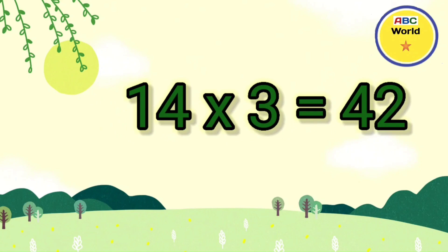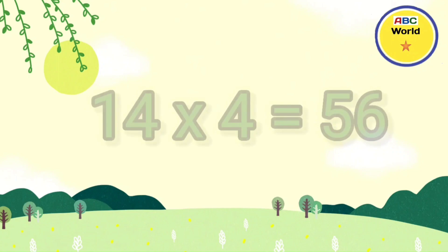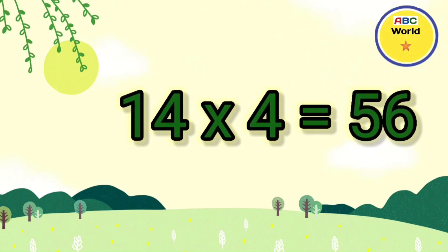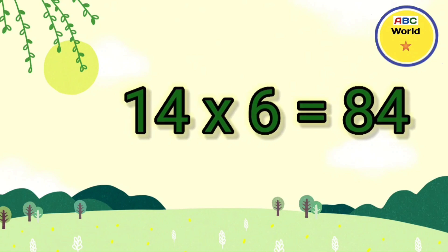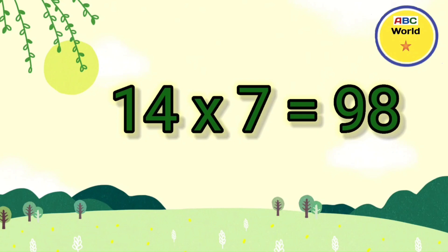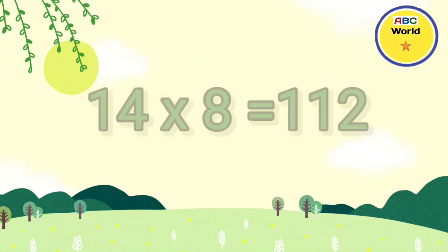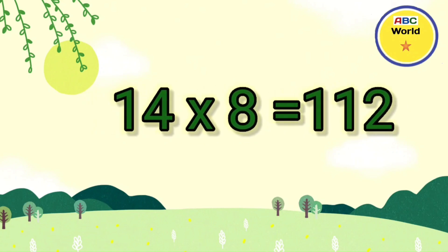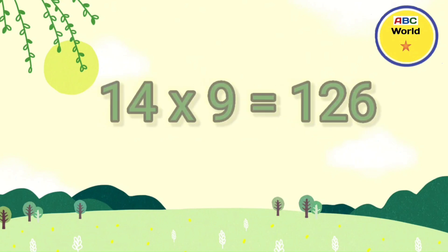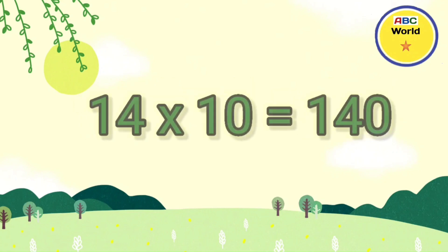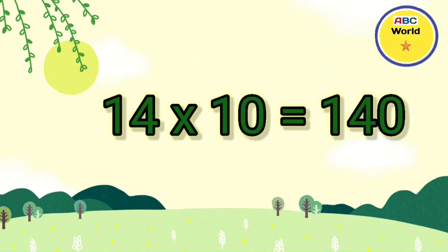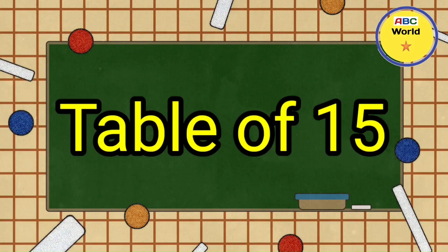14 fours are 56. 14 fives are 70. 14 sixes are 84. 14 sevens are 98. 14 eights are 112. 14 nines are 126. 14 tens are 140.